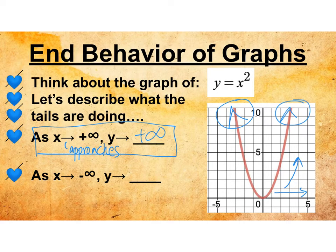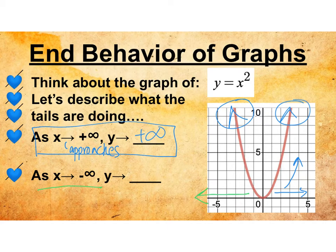The other sentence we need to include: as x approaches negative infinity — that is, as x goes to the left — what is y doing? In this case, y is also going up, so this one is going to approach positive infinity as well.